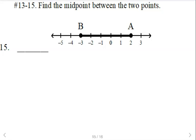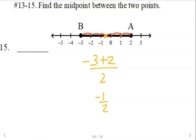The midpoint between negative 3 and 2 on a number line — you can average your two coordinates. So we get negative 1/2, or you could say negative 0.5. If you're looking at the grid, you're counting in one from each side, and then there's a half left over, so negative 1/2 or negative 0.5.